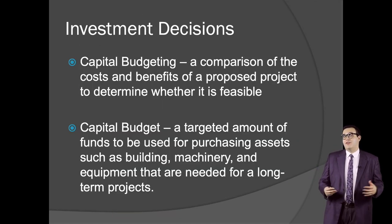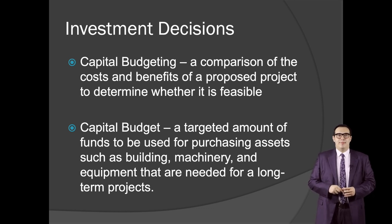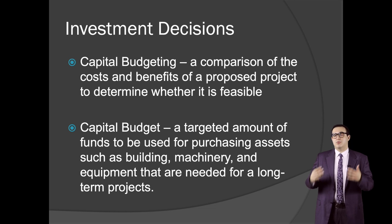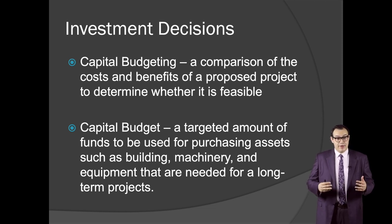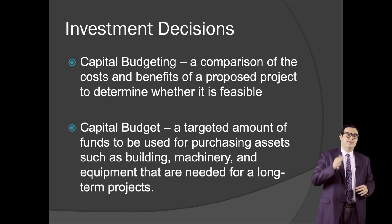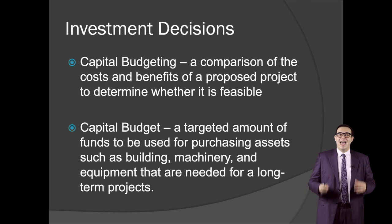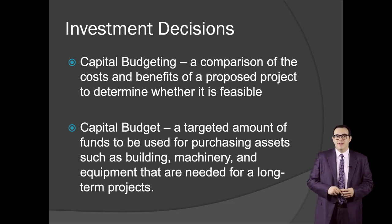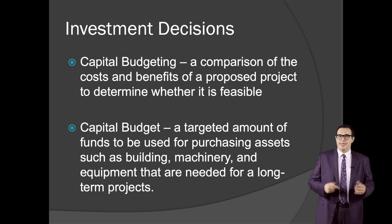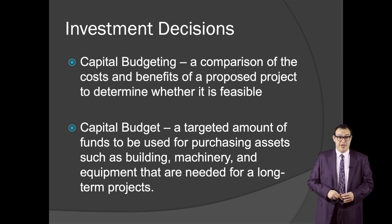Now let's talk about two fundamental definitions in financing: capital budgeting and capital budget. Capital budgeting is a comparison of costs and benefits of proposed projects to determine whether they are feasible — you have multiple projects and need to find out which one is more profitable and attractive. Capital budget is a targeted amount of funds to be used for purchasing assets such as buildings, machinery, and equipment needed for a long-term project — you might have a capital budget for one, two, or five years.